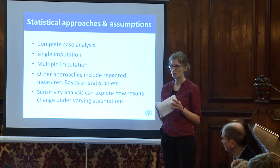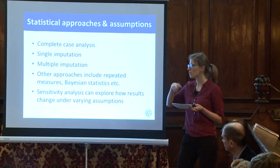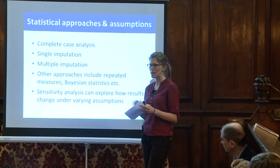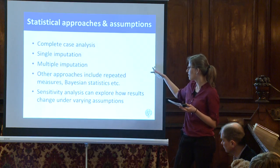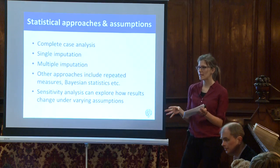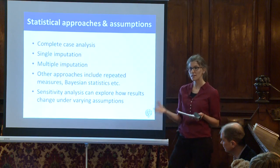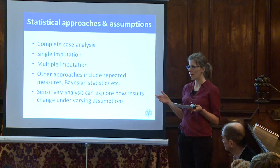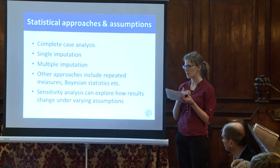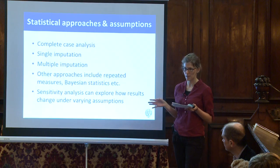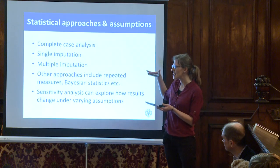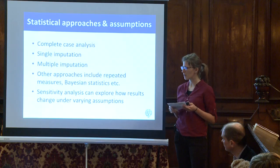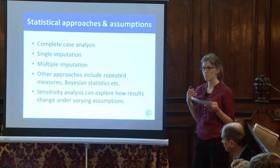Multiple imputation approaches go a little further — they introduce some error, so the model can account for uncertainty around the values we made up, putting more variability in our results. Other approaches assume that based on observed data — such as data collected when patients first entered the study, their gender, or age — we can make a sophisticated guess about their health state throughout the trial. But that's a very strong assumption because maybe it's related to something we did not observe. That's where sensitivity analysis comes in: varying the assumptions to assess how robust our results are given the missing data.